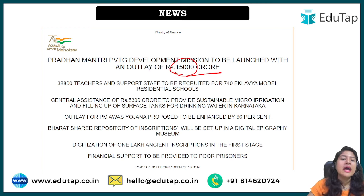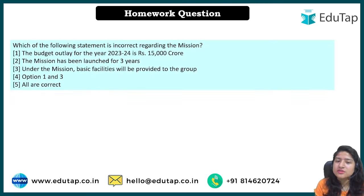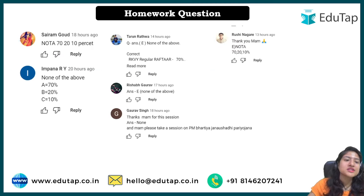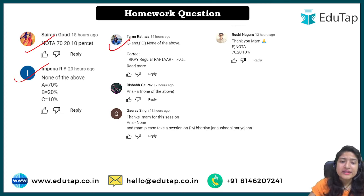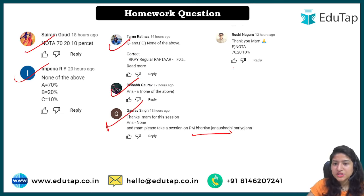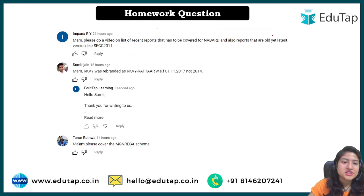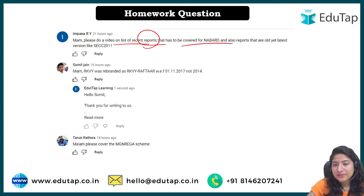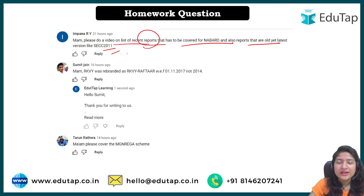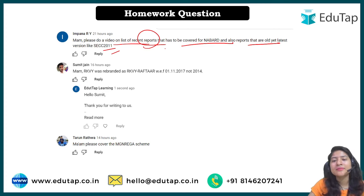That covers this particular scheme. Key things to remember: the budget outlay of rupees 15,000 crore, the background of PVTGs, and the scheme details covered in this lecture. As homework, please attempt the question given. The toppers of the last session were Sairam, Impana, Tarun, Rishabh, Gaurav, and Rushi — all gave the right answers. A suggestion was made to make a video on current reports — I will pass that on to the respective faculty as these sessions are specifically for schemes.